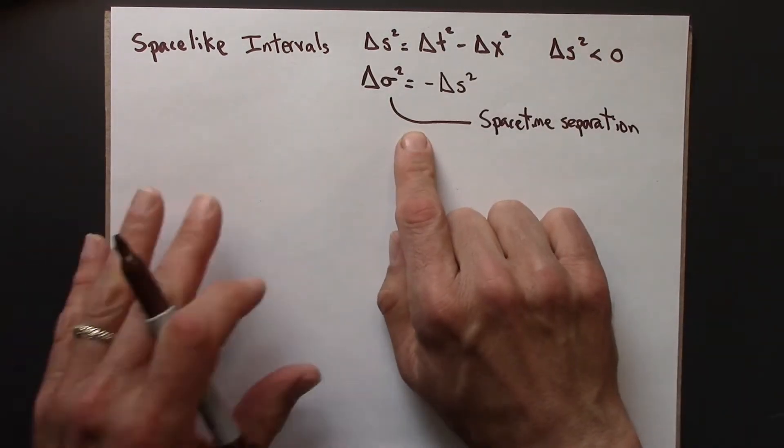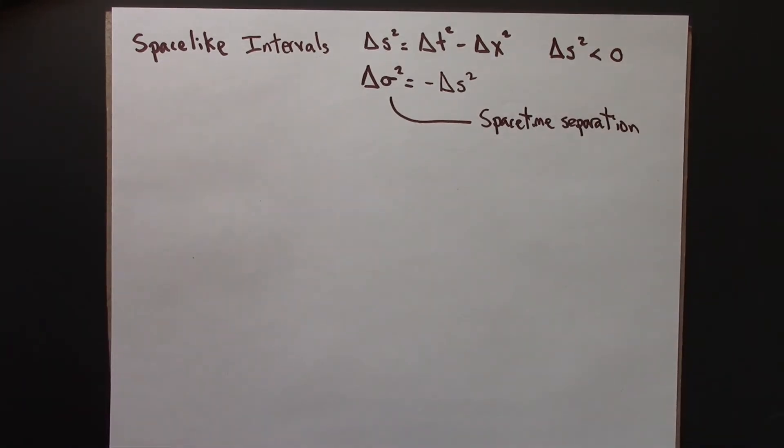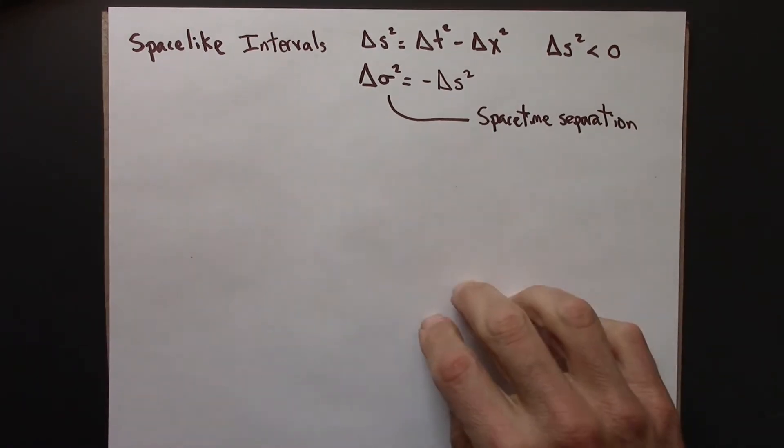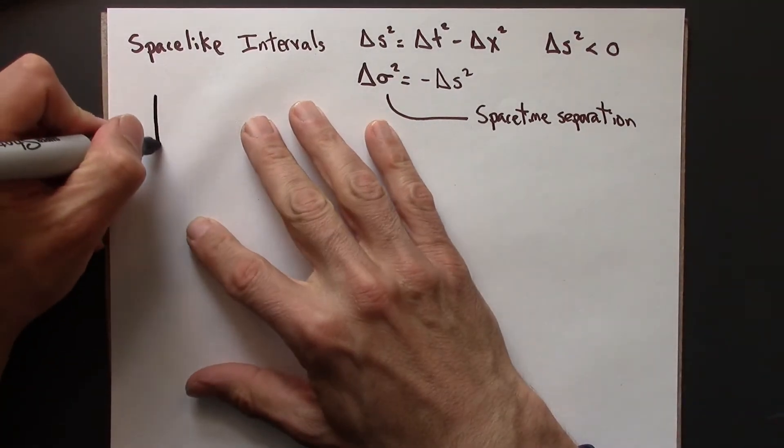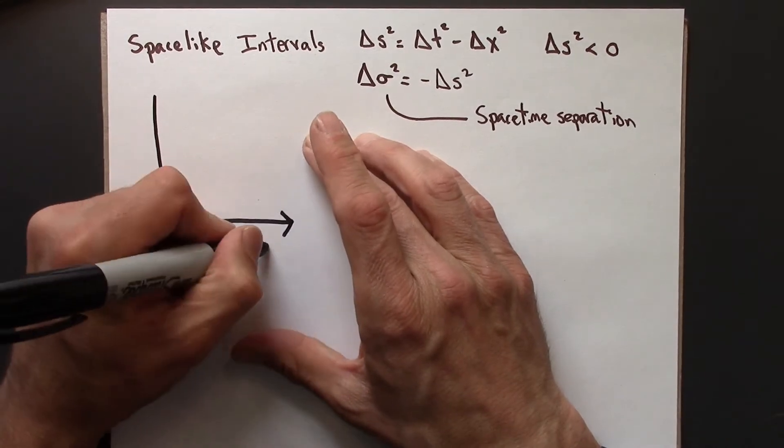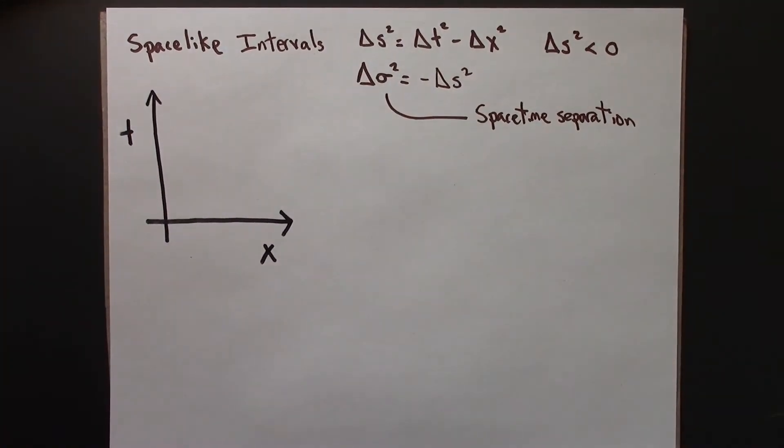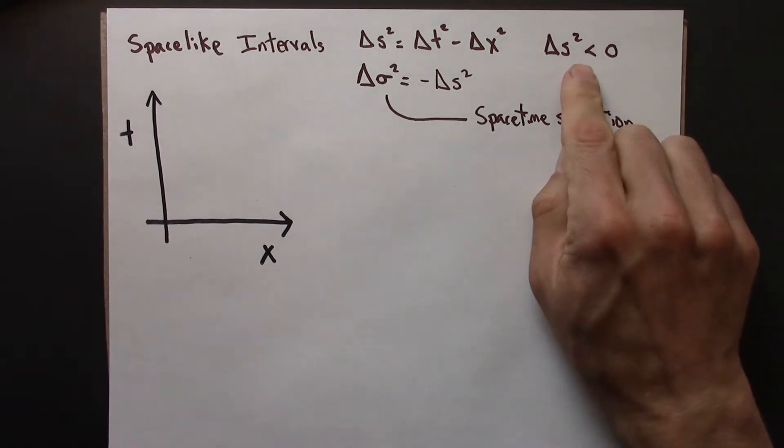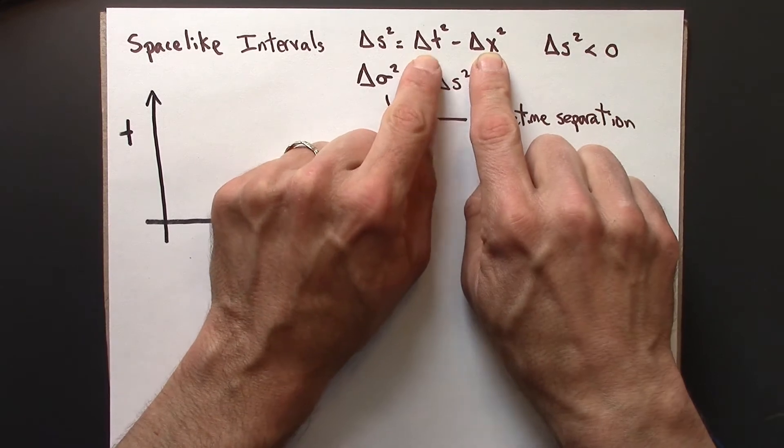So let's do what we did before and try to get some picture for how this might work. What does this look like? So let me draw a little spacetime diagram over here. I've got x and t. So delta s squared is negative. That means that this term is bigger than that term. This term is bigger, so that gives a negative number.